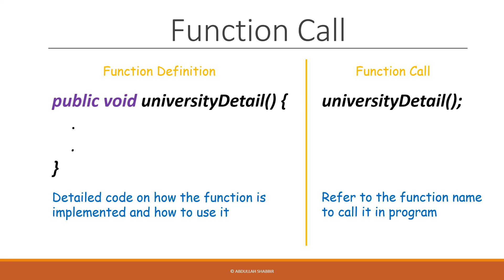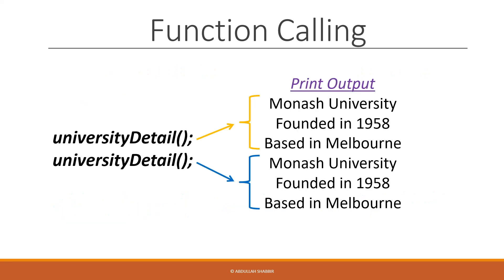So now we have a function that prints out UniversityDetail, and we can call it and get its output. We can actually call it repeatedly. Let's call this function twice in a row — now our UniversityDetail will print out twice, and it's easy to repeat.